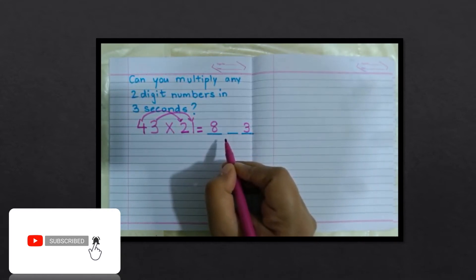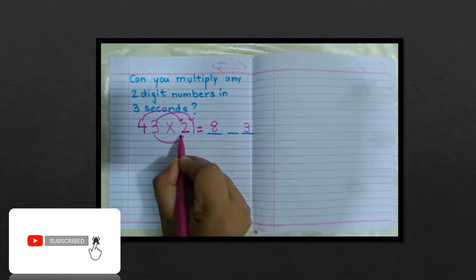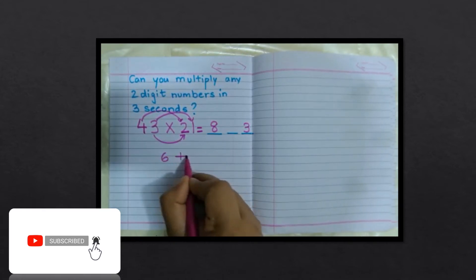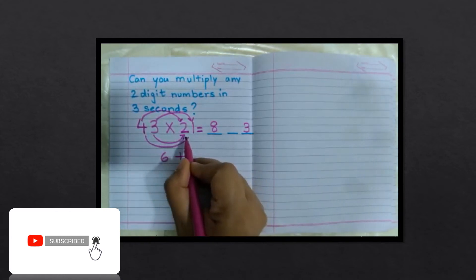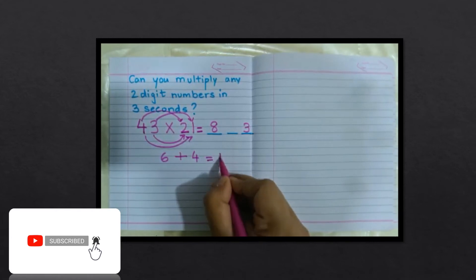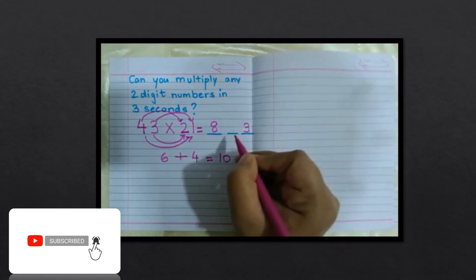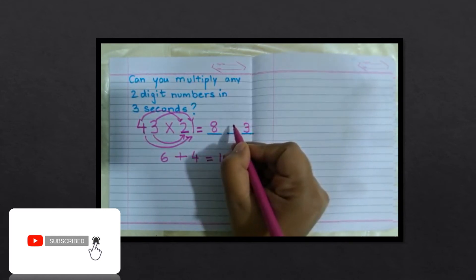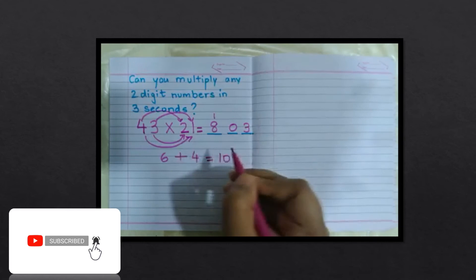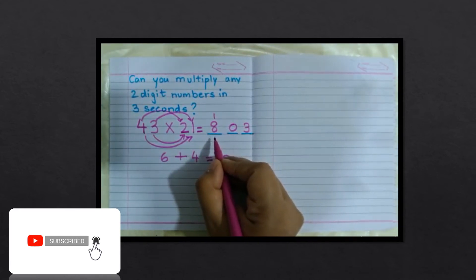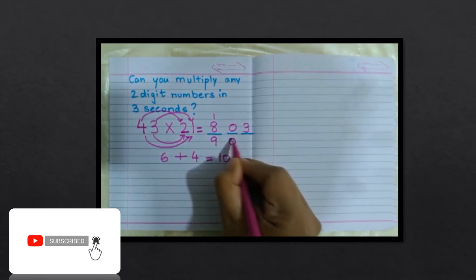For calculating the middle position, we need to cross multiply. Three multiplied by two gives six, plus four ones are four, so six plus four is ten. You cannot write a two-digit number here — write zero and carry over one.